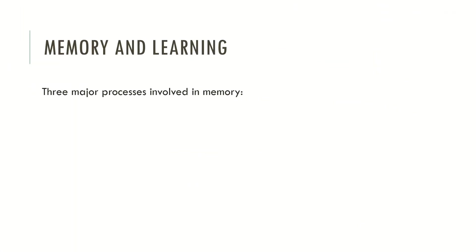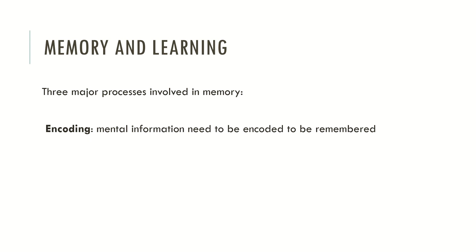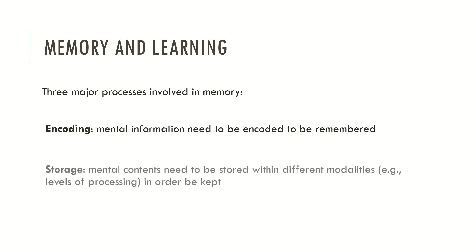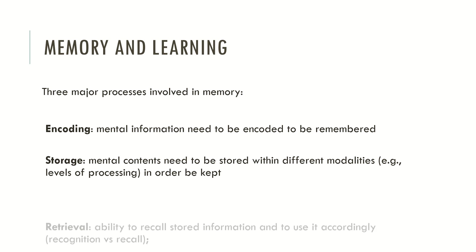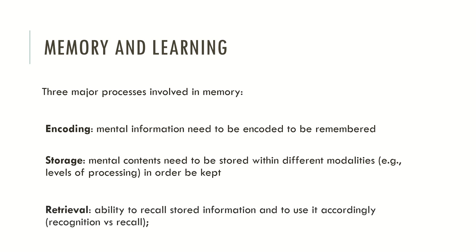Typically, three major processes are involved in memory. Encoding, which means that mental information needs to be encoded to be remembered. Storage, where mental contents need to be stored with different modalities — which may be described as levels of processing — in order to be kept. And retrieval, which is the ability to recall stored information and to use it accordingly. Typically we can differentiate two processes: recognition and recall.